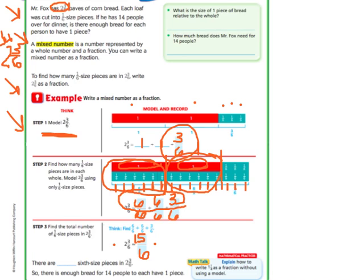Since the question is asking us if there's enough for 14 people, 15 is bigger than 14. So yes, there are 15 sixth-size pieces. So there is enough bread for 14 people, and there will actually be 1/6 left over. Because if we're doing that 15 and taking away the 14 pieces for the 14 friends, that's 1/6 left over.